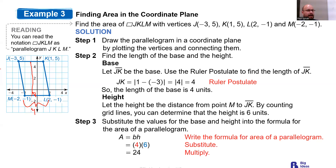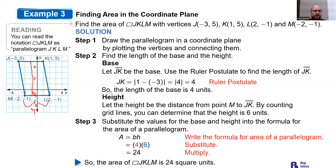Area should always be expressed in square units, so the answer is 24 square units. For perimeter, it is just a distance, so no square units — just regular units.